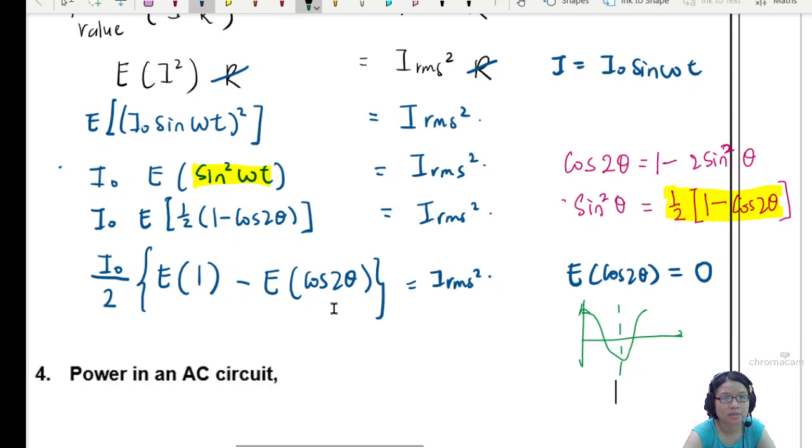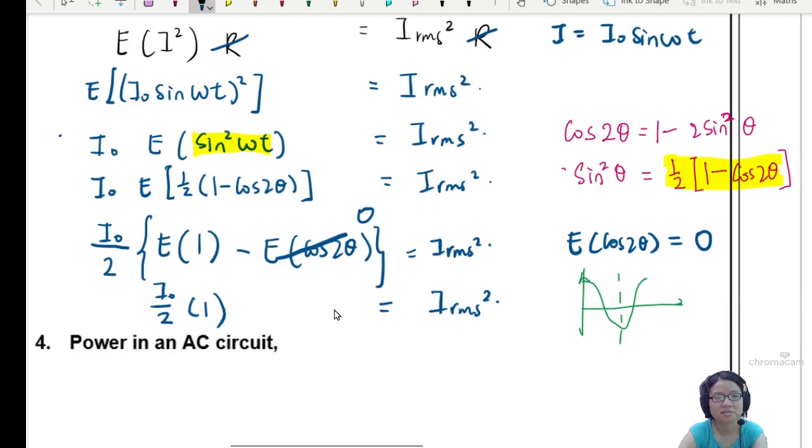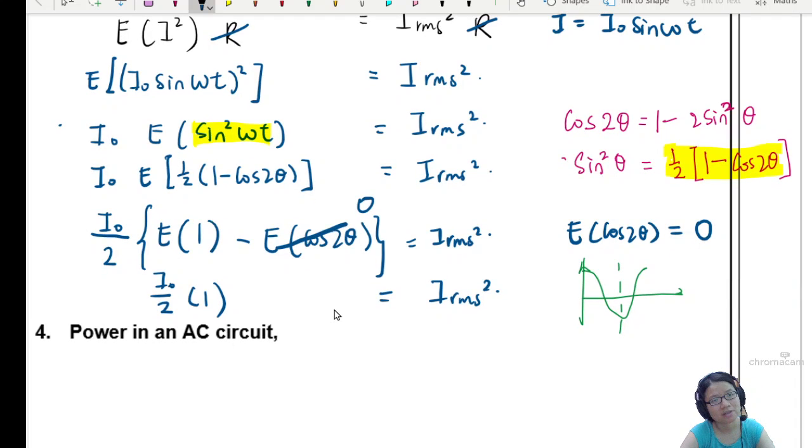So what you have now is this will be I0 squared over 2. So I'm just going to write this one as 0. So I will have I0 squared over 2. What is the expected value of 1 times 1? This is equal to IRMS squared. So hence, is there a square missing? Yes, my I0 square is missing. My bad. Let me put it back. There we go. There's a square here. Because the square is for both I0 and sine. So this will be I0 square, sine square, omega t. I0 square, I0 square, I0 square.